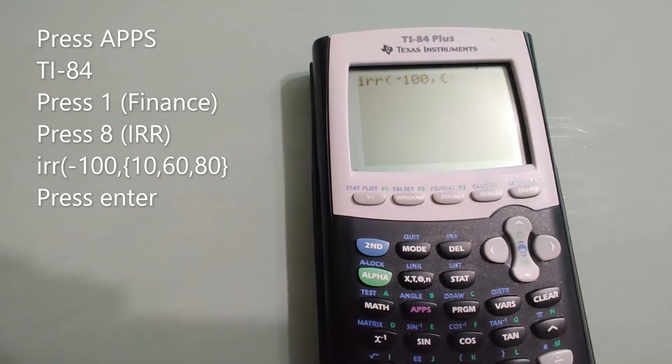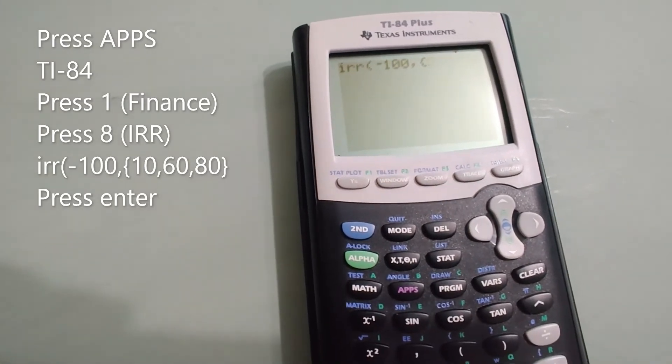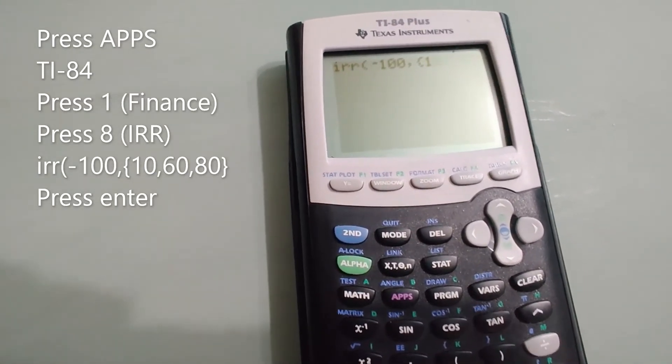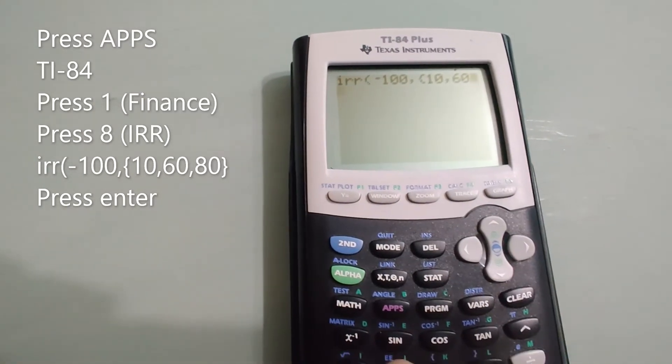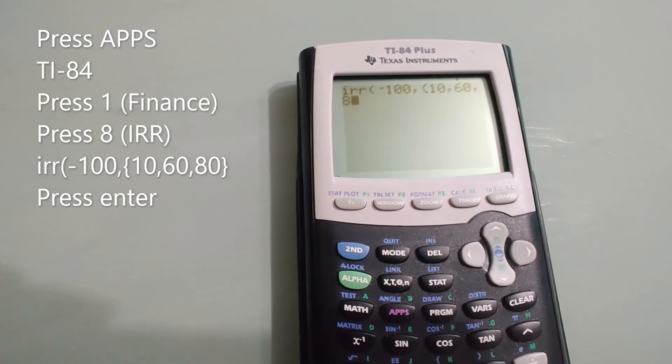And now period 1 amount is 10, comma. Period 2 amount is 60, comma. Period 3 amount is 80.